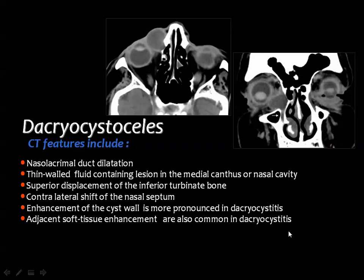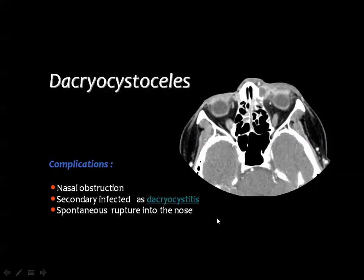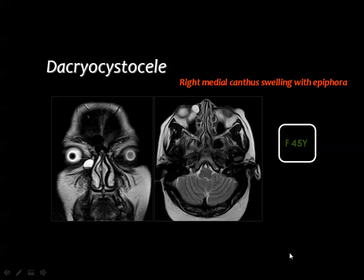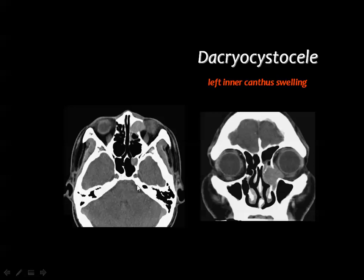If the dacryocele cystic lesion is infected, contrast injection produces marginal enhancement, indicating the presence of infection and abscess formation. Being a fluid-containing cystic lesion, the dacryocele appears as bright signal on T2-weighted MRI. Coronal T2 images also show bright signal of the dacryocele, corresponding to the anatomic site of the nasal lacrimal duct.